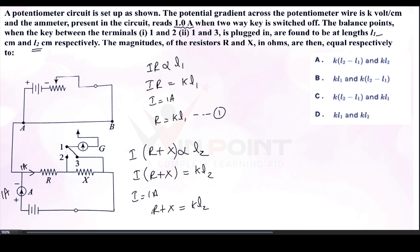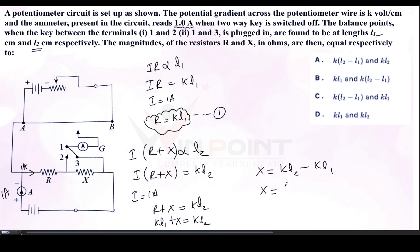From equation 1, R = k·L1. Substituting into the second equation: k·L1 + X = k·L2, so X = k·L2 − k·L1 = k·(L2 − L1). Therefore R = k·L1 and X = k·(L2 − L1). Looking at the options, the correct answer is R = kL1 and X = k(L2 − L1).